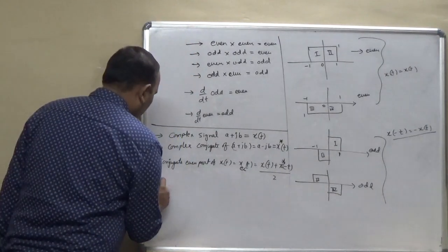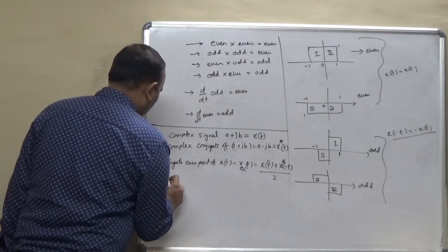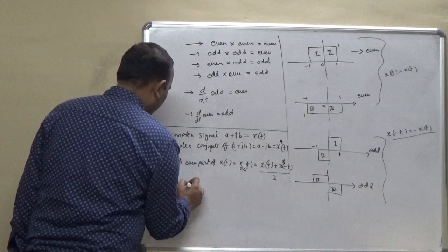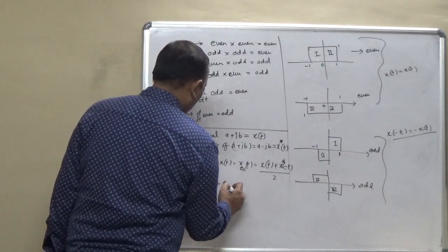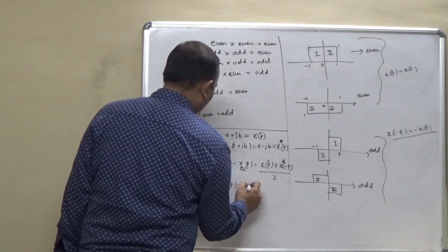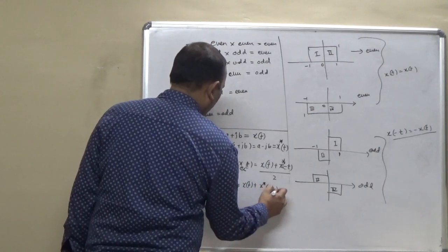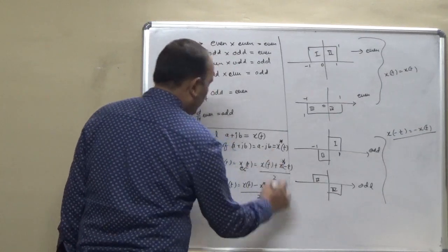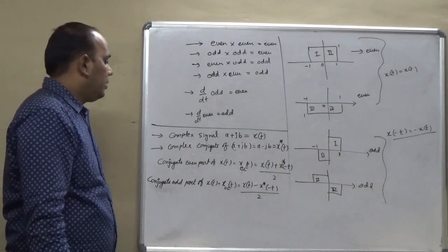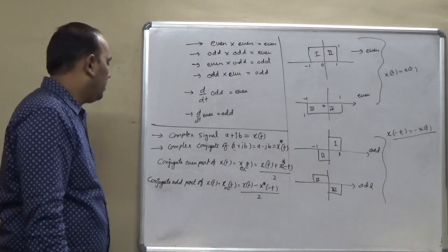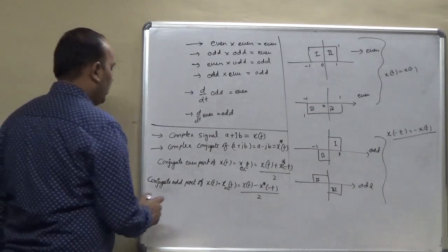Then, conjugate odd part of x(t) that is x_oc(t) is equal to x(t) minus x asterisk -t divided by 2. Here we will replace by minus of x_ec -t divided by 2. That is the complex even part and the complex odd part.